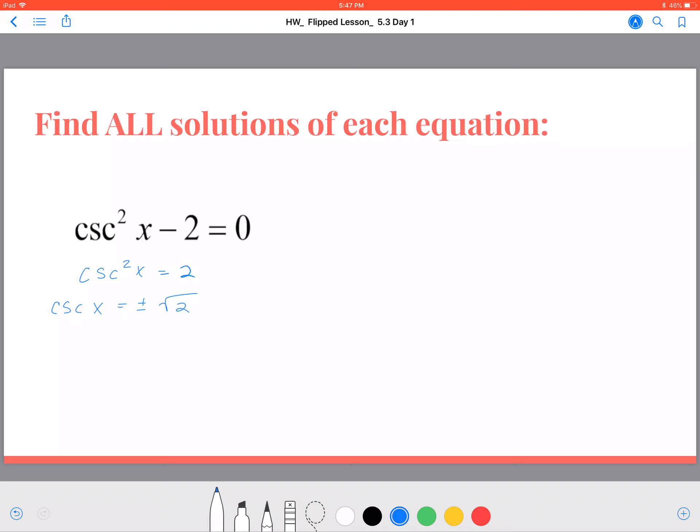There's actually two solutions, because if I square the square root of 2, I'll get 2. If I square the opposite of the square root of 2, I will also get the value of 2.